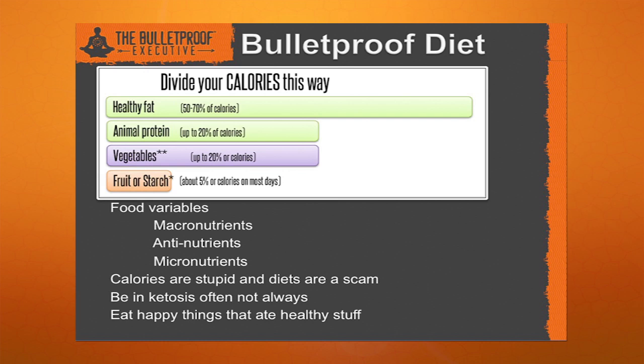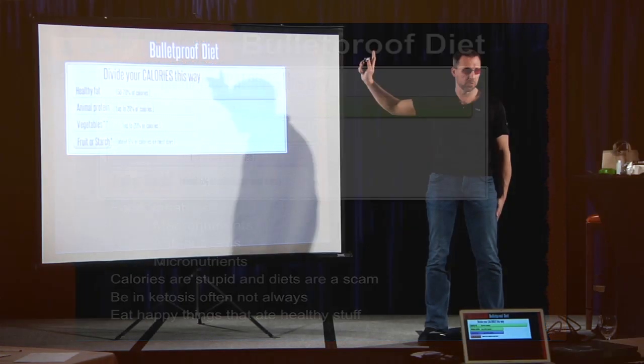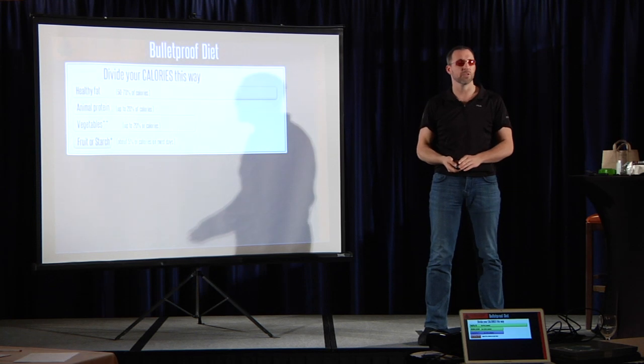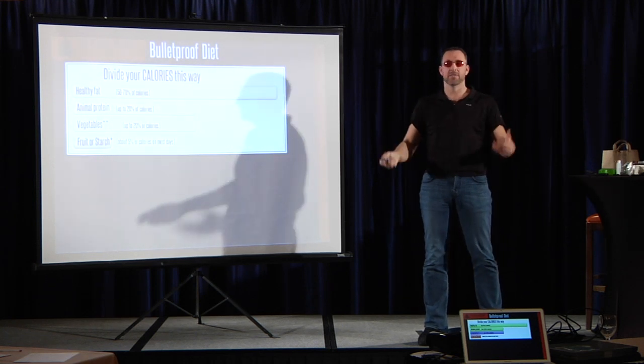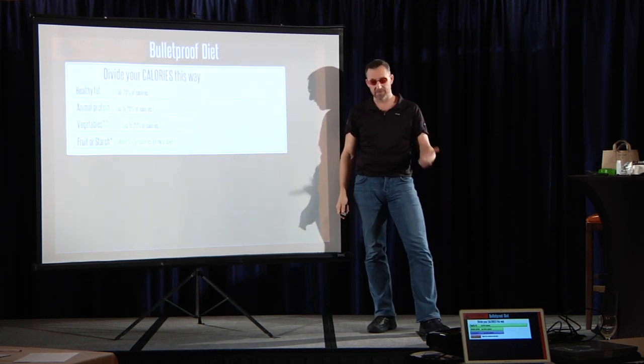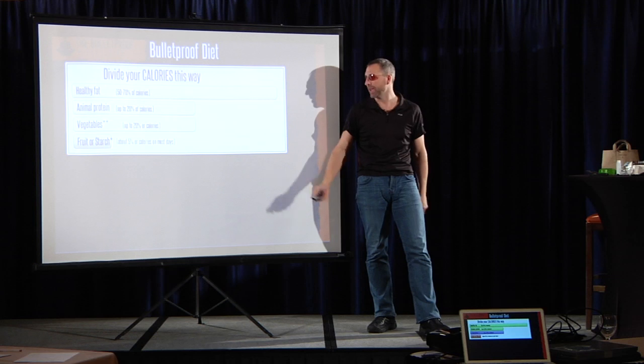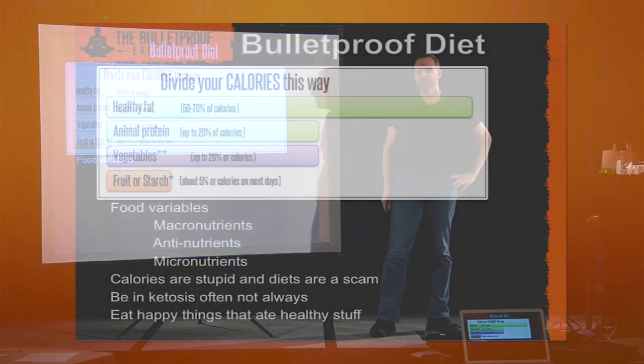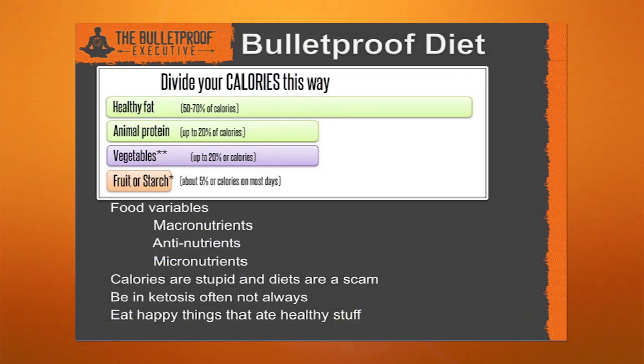I recommend you do some starch once a week, maybe every three to seven days if you're exercising a ton. You want to really focus on fat for breakfast, fat and protein for lunch, and fat and protein for dinner, and veggies whenever you feel like it.